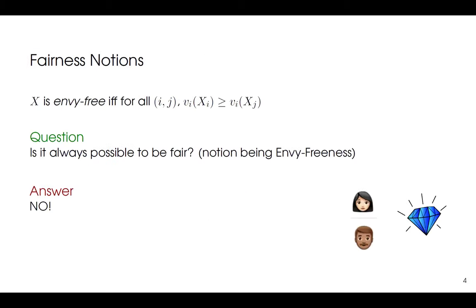One essential fairness notion is envy-freeness. We say a partition X is envy-free if there is no envy among agents — that is, the value of agent i from xi is at least vi(xj) for every other agent j. You apply the same valuation function vi, and the value for i's own bundle is at least the value of any other bundle. This should be true for every agent.